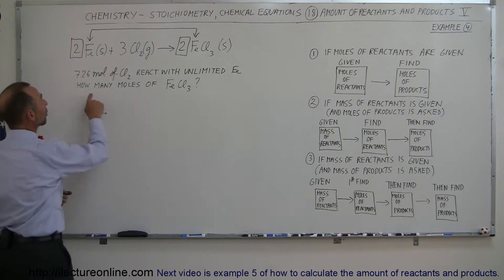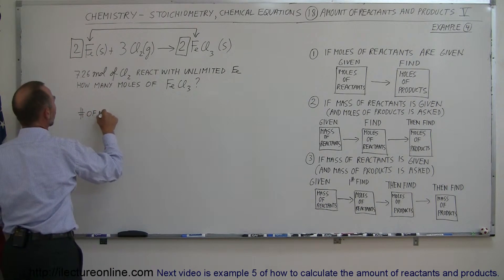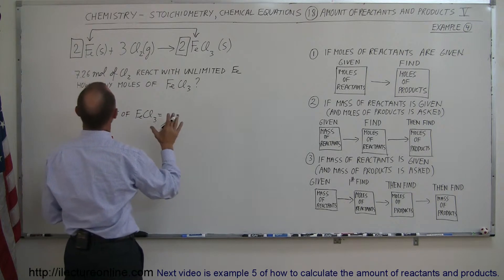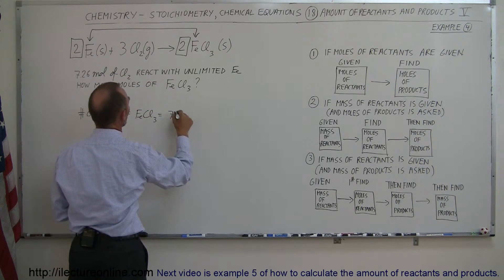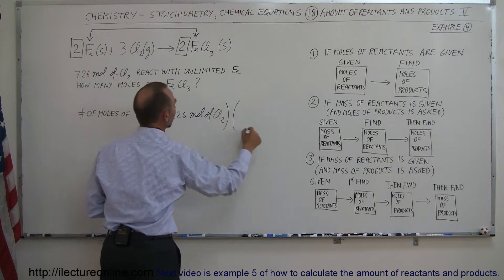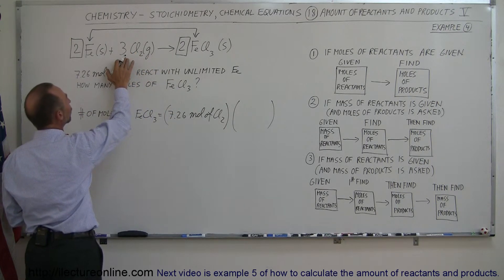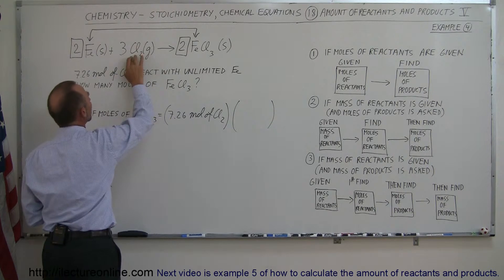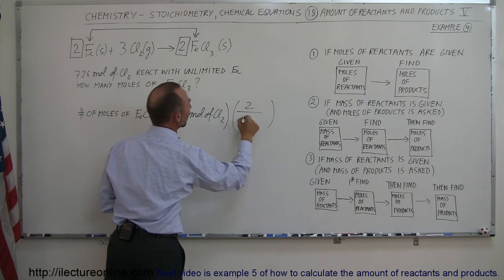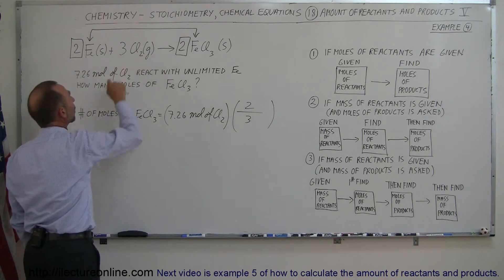Next we're finding the number of moles of ferric chloride. The moles of ferric chloride equals the moles I started with — 7.26 moles of chlorine gas — multiplied by the ratio of moles of ferric chloride to moles of chlorine gas. It's a two-to-three ratio: for every three moles of chlorine gas I end up with two moles of ferric chloride. So it's what I end up with divided by what I started with, giving two-thirds.